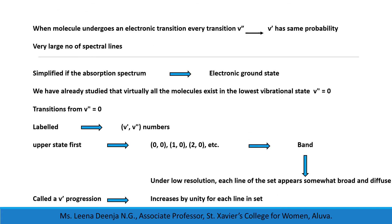When a molecule undergoes an electronic transition, every transition from v″ to v′ has the same probability, so if we consider all transitions there will be a very large number of spectral lines. The situation is considerably simplified if the absorption spectrum is considered from the electronic ground state ε″, since virtually all molecules exist in the lower vibrational state v″ = 0. So here we consider transitions starting from v″ = 0.